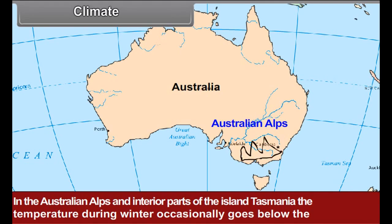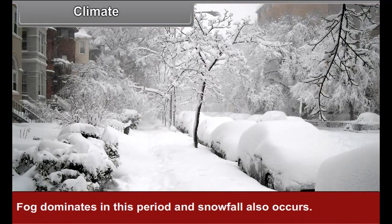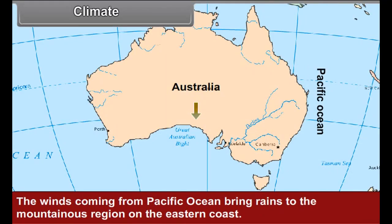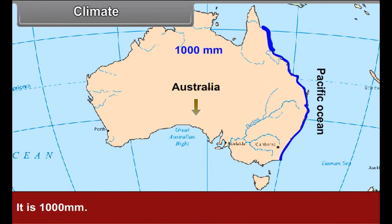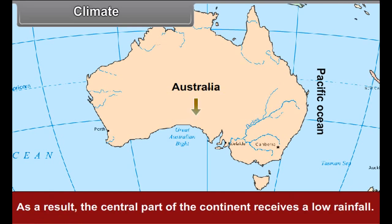In the Australian Alps and interior parts of the island of Tasmania, the temperature during winter occasionally goes below the freezing point. Fog dominates in this period and snowfall also occurs. The winds coming from the Pacific Ocean bring rains to the mountainous region on the eastern coast — about 1000 millimeters. As the winds go westward crossing the mountains, they become dry and hot, and as a result the central part of the continent receives low rainfall.